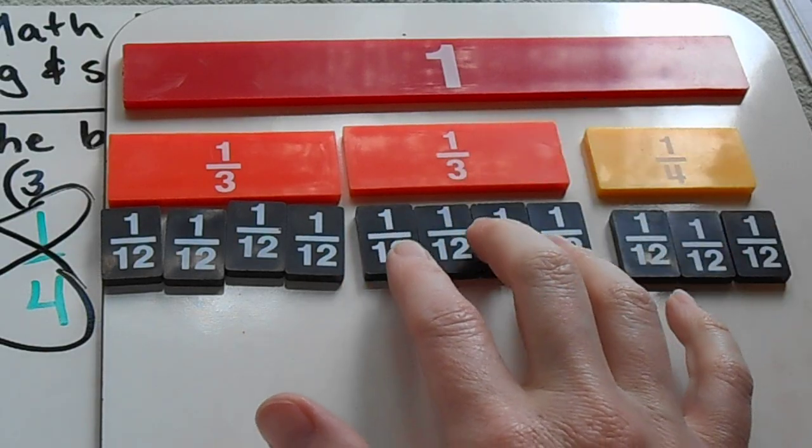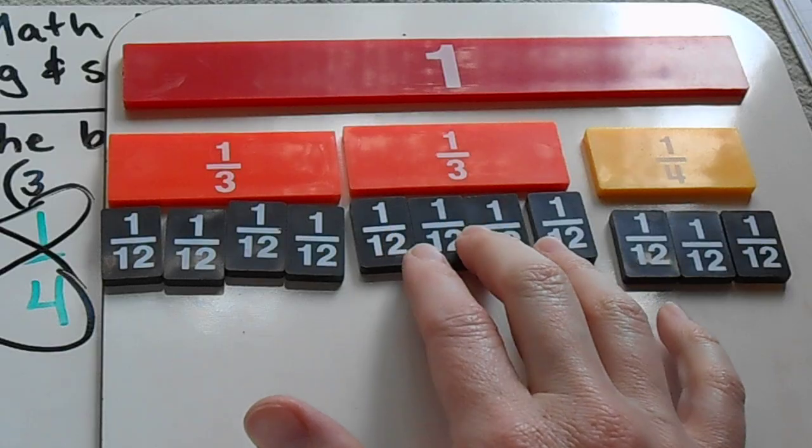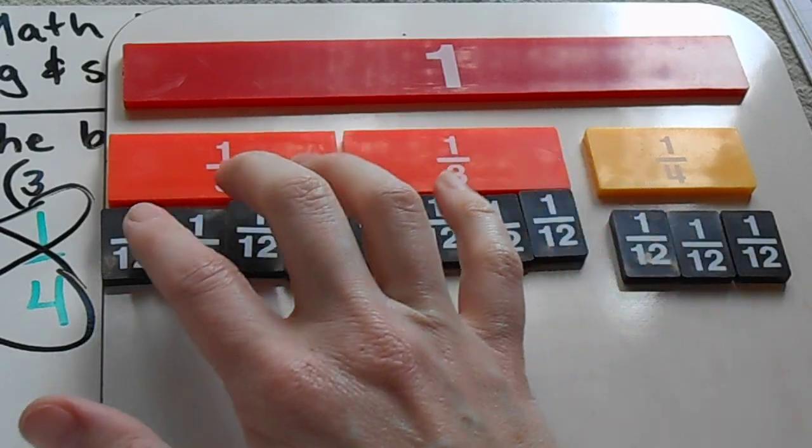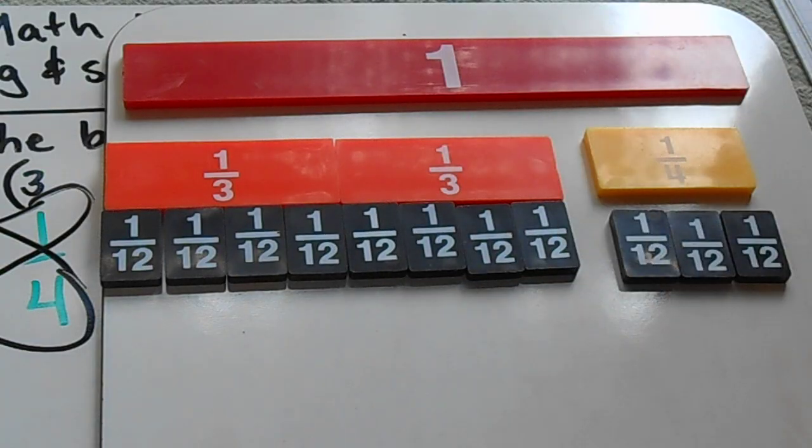And another third, this one's split into four. The only size pieces that will fit in there are twelfths, because four-twelfths is equivalent to one-third. Four-twelfths is equivalent to this third. So I have a total of eight twelfths, or I have eight pieces out of my two-thirds.